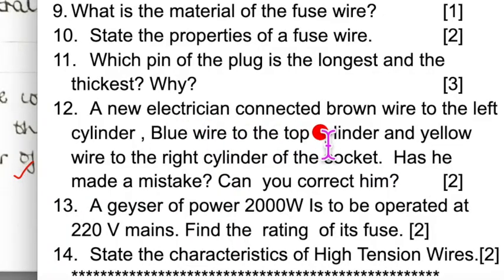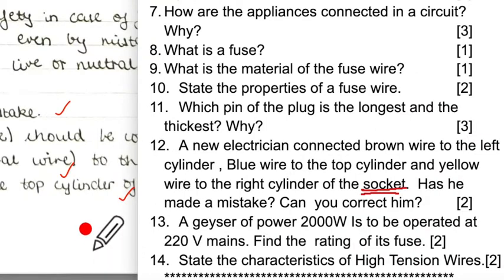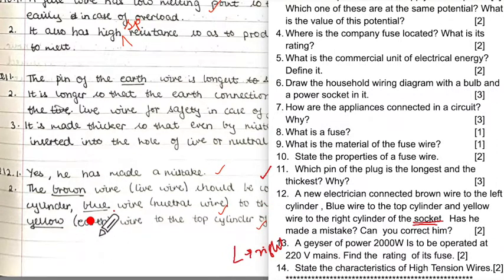Question twelve: A new electrician connected the brown wire to the left cylinder, the blue wire to the top cylinder, and the yellow wire to the right cylinder of the socket. Remember, in the socket the live is on the right. He has made a mistake — the brown wire should be connected to the right, the blue wire to the left, and the yellow wire to the top cylinder.